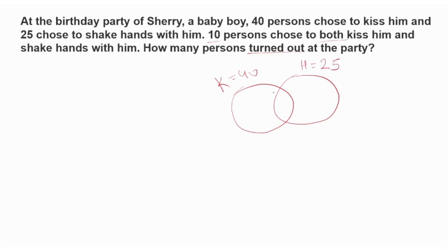So let's set this up: set A represents 40 and set B represents 25. This is 30.